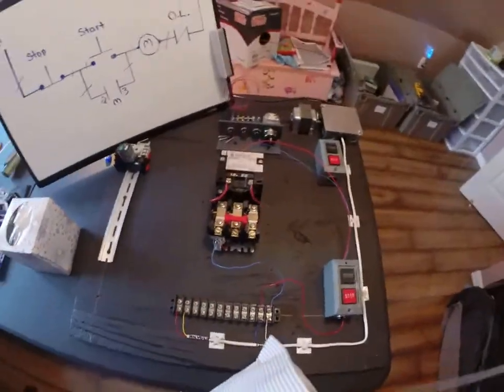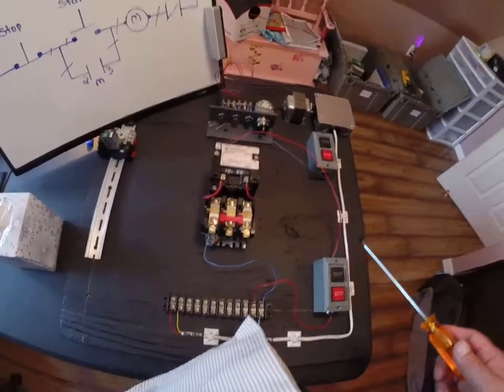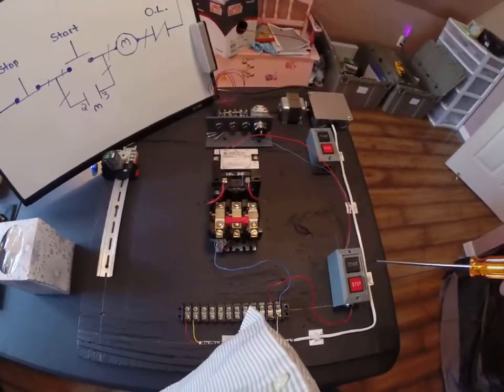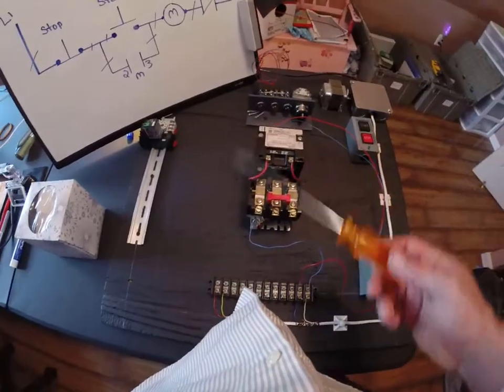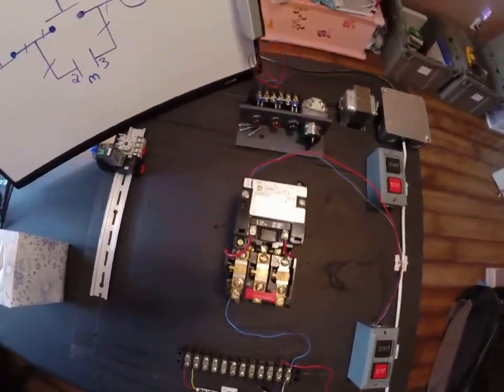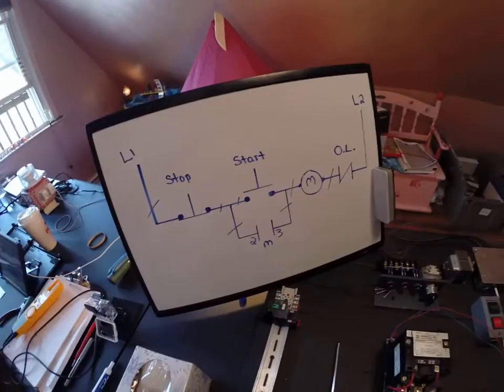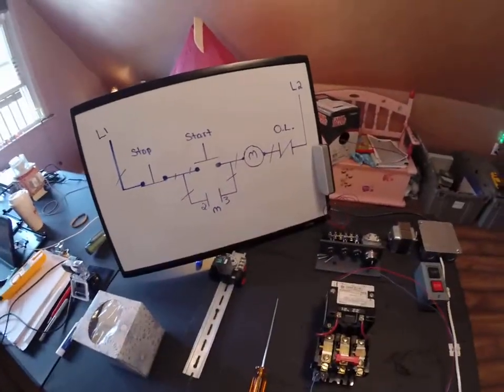So simple circuit—four wires really to get this thing up and running. Two of them are provided from the factory. Start-stop motor starter, Square D NEMA heavy duty motor starter, and there's your basic circuit to get that thing running. Hope you got something out of that and I'll see you in the next video.